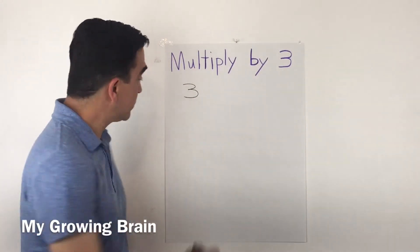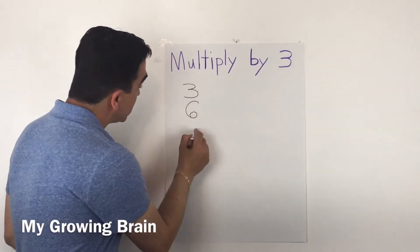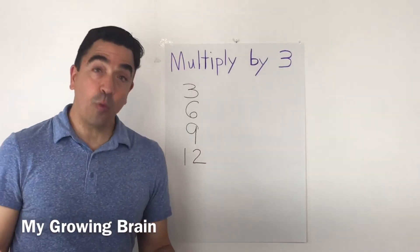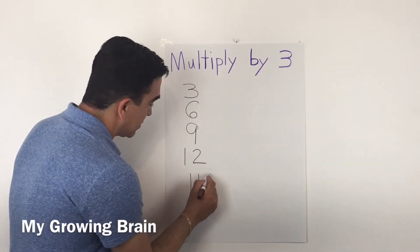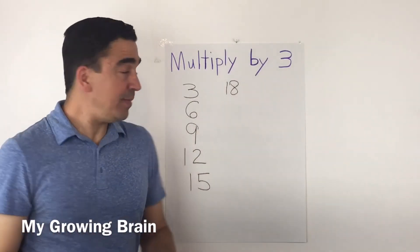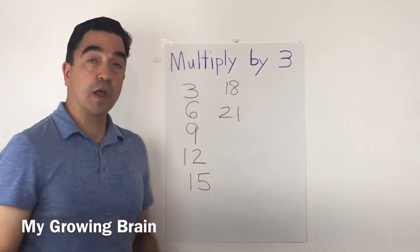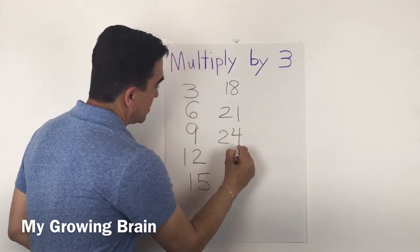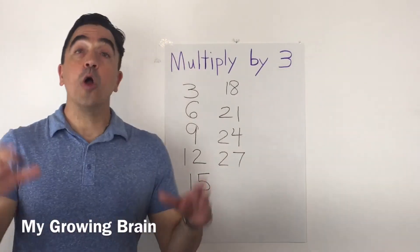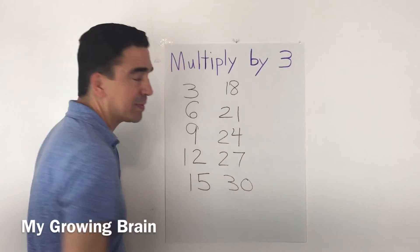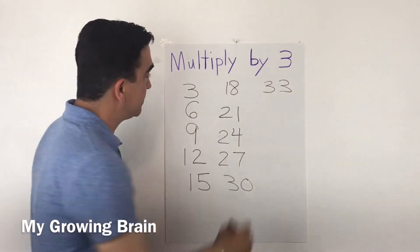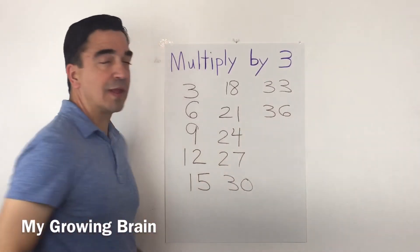Three, six, nine, 12, 15, 18, 21, 24, 27, 30, 33, and 36.